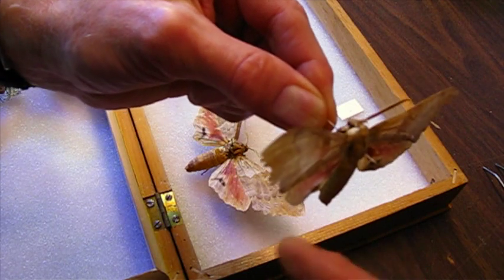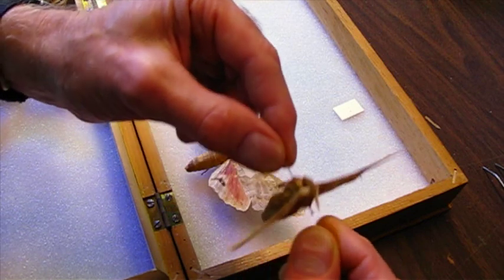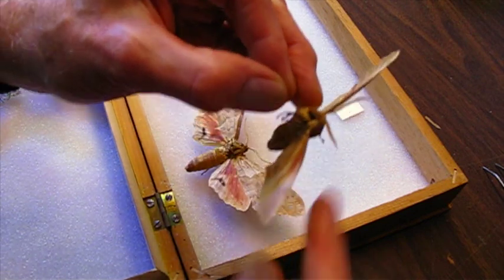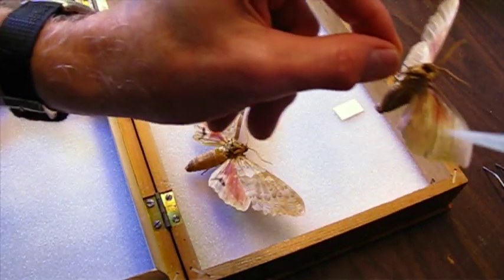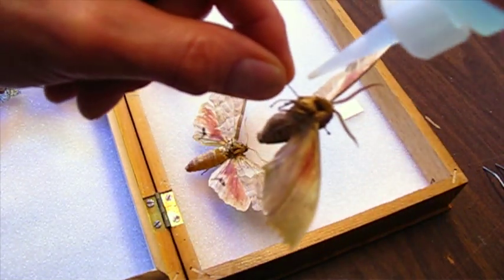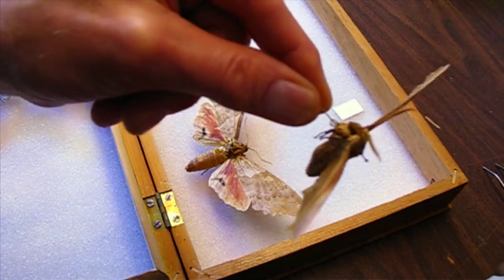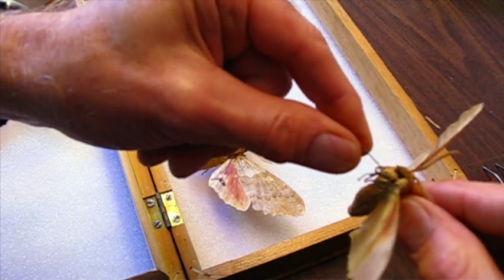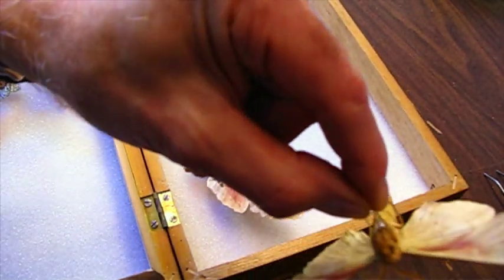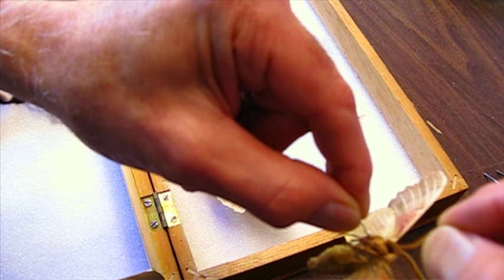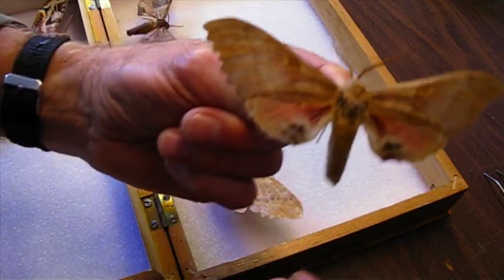Now I notice this one's spinning on the pin a little bit. There's a way to fix that too. I'm going to push the moth up towards the head of the pin. I'm going to get my glue. I use water-based gel. Put a little dot of glue on the pin just above where the body is, and then gently push that back onto the pin. Maybe just smear that glue around the edge of it a little bit. When that dries, get it in the right position here, that'll hold the moth in place.